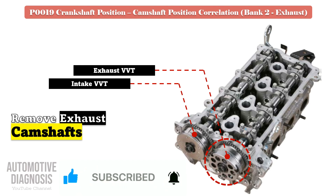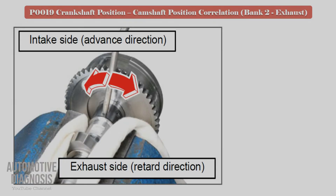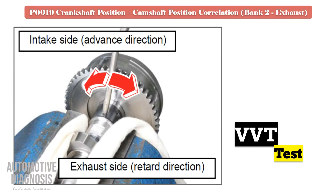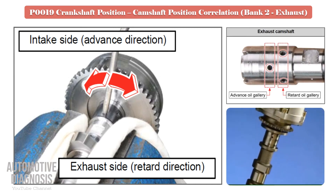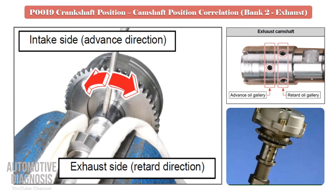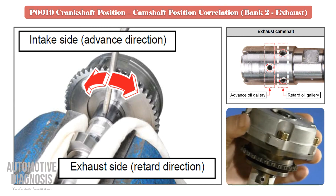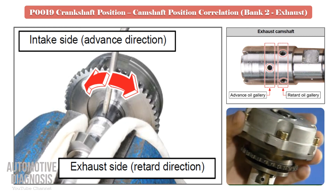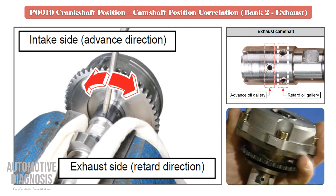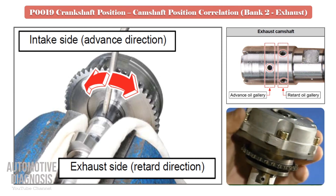Test the exhaust VVT by providing compressed air into the relevant oil galleries. When you provide air into the retard oil gallery, the VVT should rotate, as the exhaust VVT is locked at maximum advance. Before providing compressed air into the retard oil gallery, make sure the VVT is locked and does not rotate. If the VVT fails this test, it must be replaced.